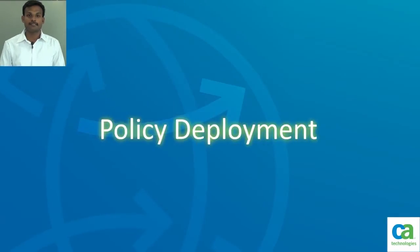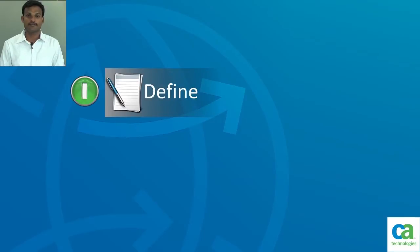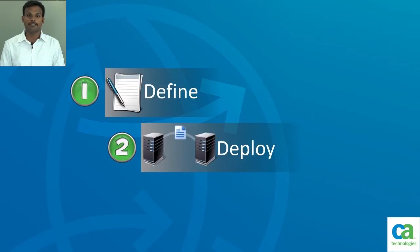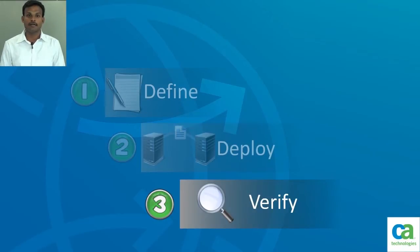Policy deployment consists of a series of steps. Step one, we define the policy using CLang command line language. Step two, we deploy the policy from the Enterprise Management Console. Step three, we verify the deployment status of the policy. If the deployment status shows an error, we look into the error description from the Enterprise Management interface, correct the errors in the policy, and redeploy. This is a brief outlook of how the policy deployment is done.